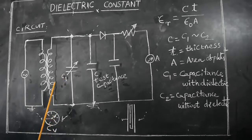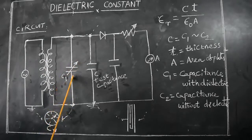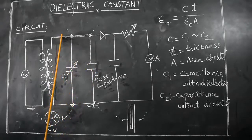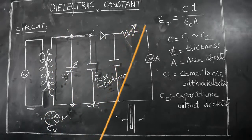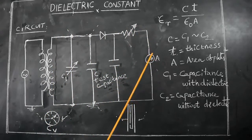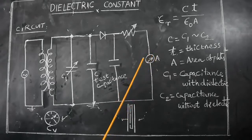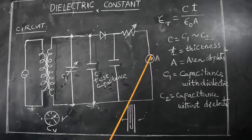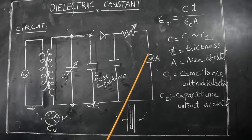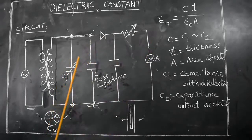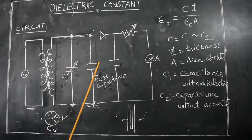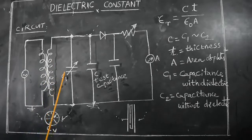As we vary C1 in steps, at a particular capacitance value C1 becomes equal to the test capacitance C. When C1 and C are equal, maximum current flows through the circuit. The current is measured by a digital ammeter which directly displays the current. This digital ammeter shows maximum current when C1 equals the test capacitance. At that point, the C1 value is known and equals the capacitance between the conducting plates.